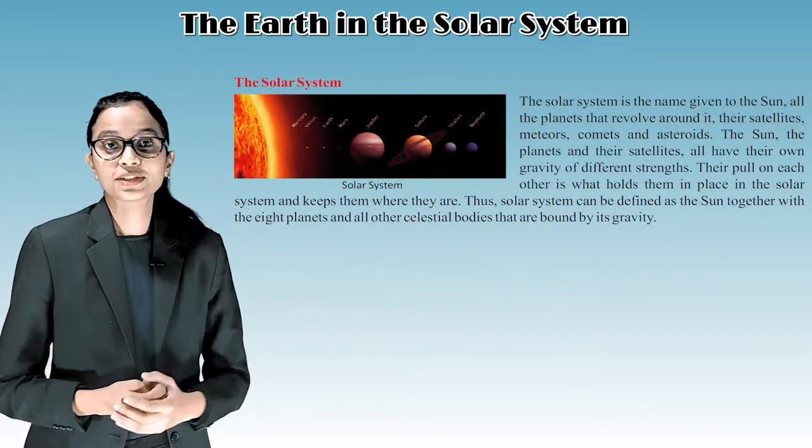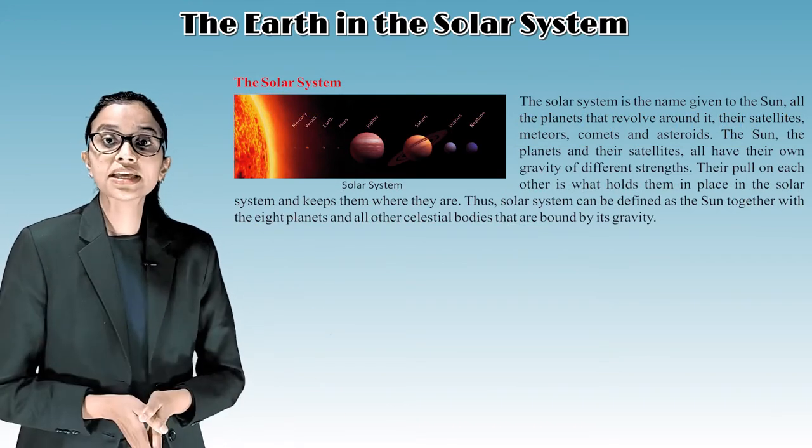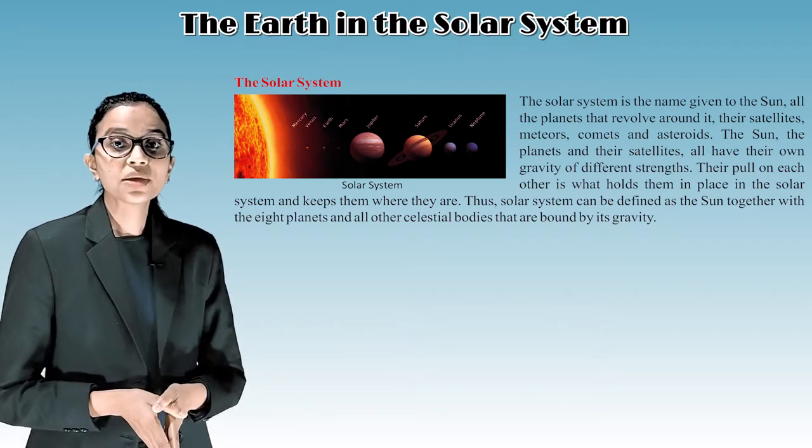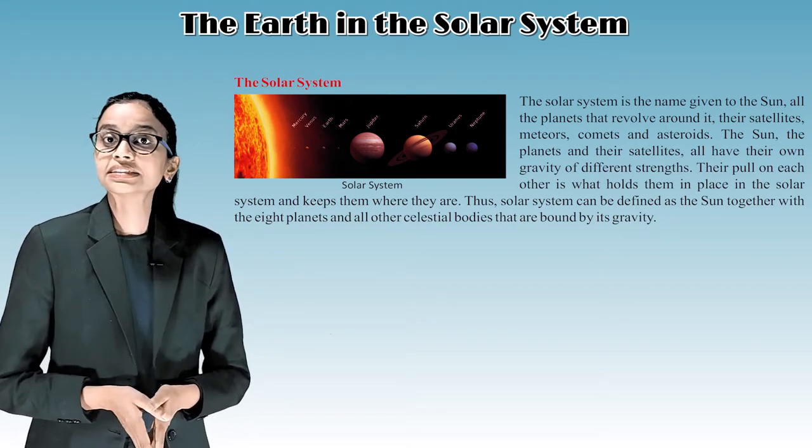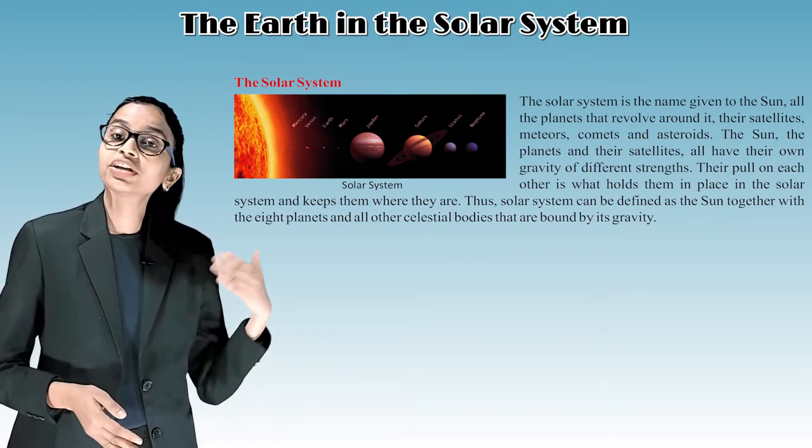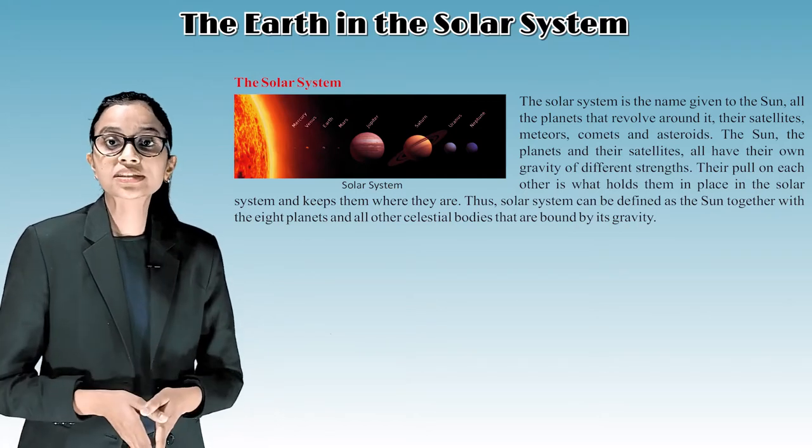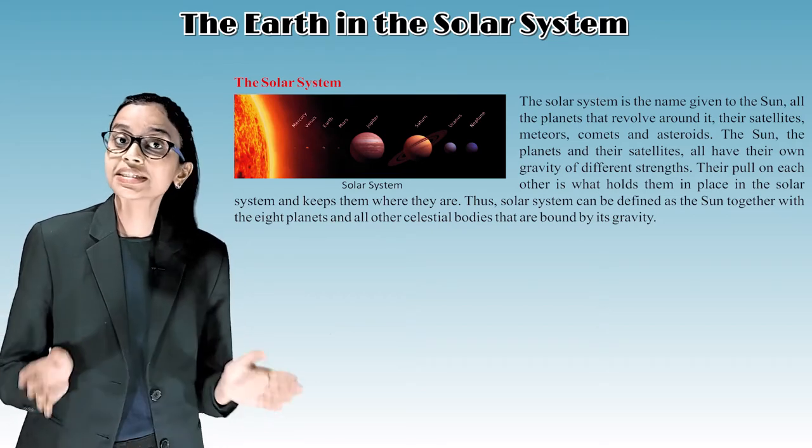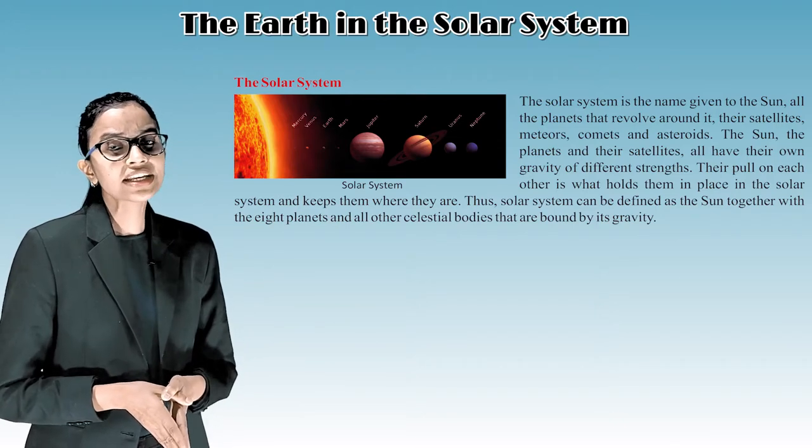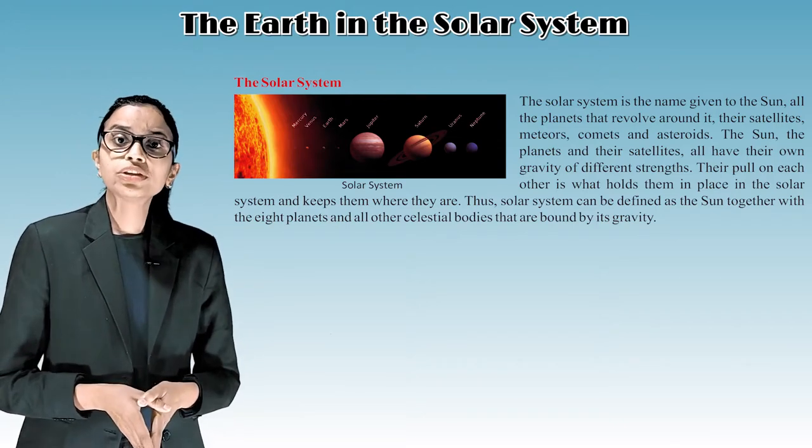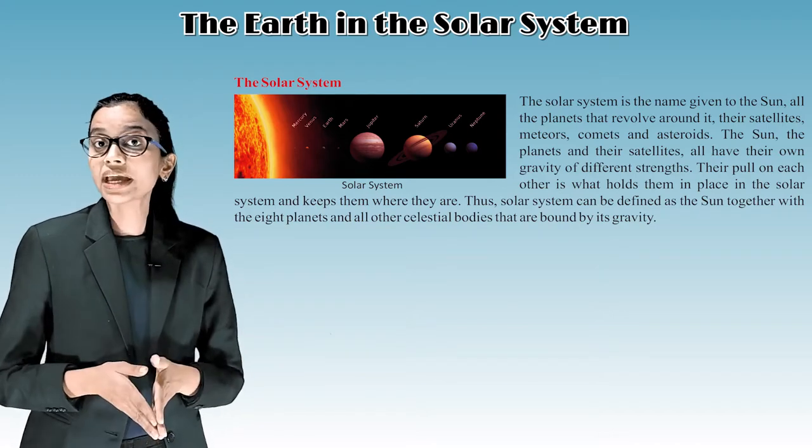The solar system. The solar system is the name given to the sun, all the planets that revolve around it, their satellites, meteors, comets and asteroids. The sun, the planets and their satellites all have their own gravity of different strengths. Their pull on each other is what holds them in place in the solar system and keeps them where they are. Thus, solar system can be defined as the sun together with each planet and all other celestial bodies that are bound by its gravity.